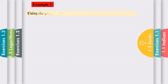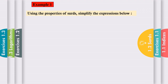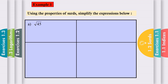Example 1. Using the properties of surds, simplify the expressions below. Example a: square root of 45. So square root of 45 can be simplified into two numbers — square root of 9 times square root of 5 — because 9 times 5 is 45. And because we have square root of 9, the answer is 3 square root of 5.